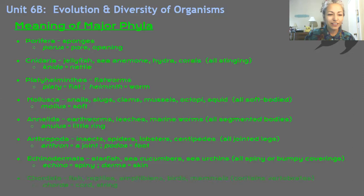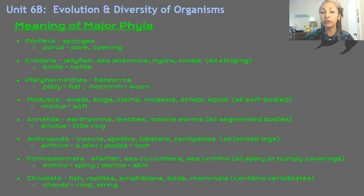Chordata — those are fish, reptiles, amphibians, birds, mammals. 'Chorda' is the root word, meaning chord or string. The notochord was one of the four characteristics of all chordates in this phylum. So chordata has the root word 'chorda,' meaning chord, and you can think of that as containing vertebrates — they all have a notochord.